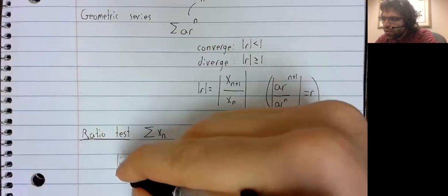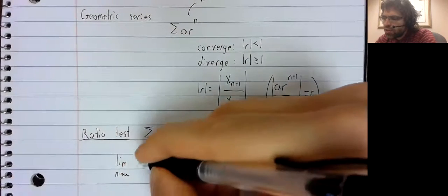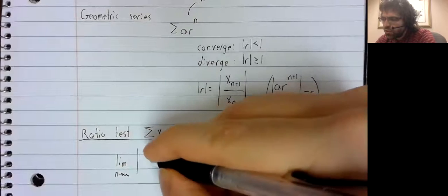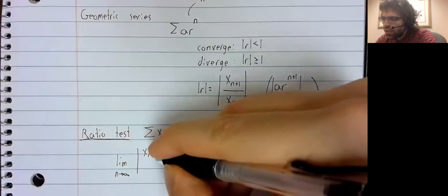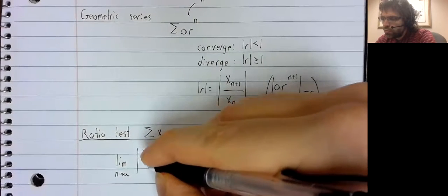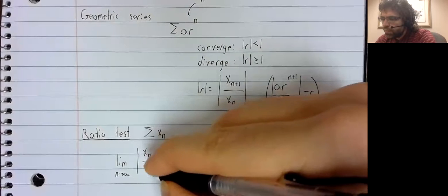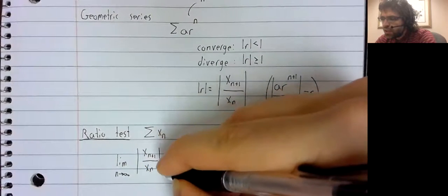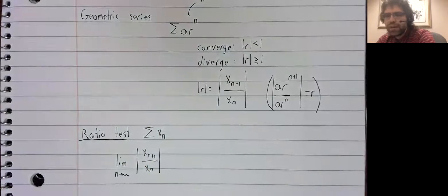Instead, we look at the limit of these ratios. Instead, we look at the limit of these ratios as N goes to infinity.